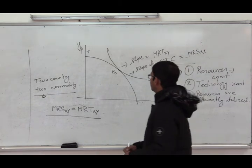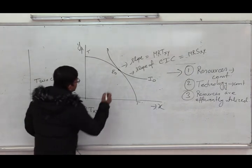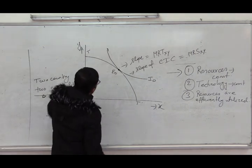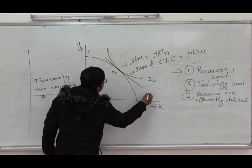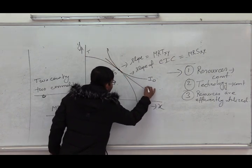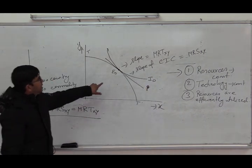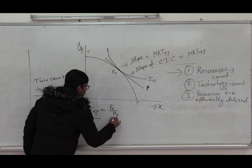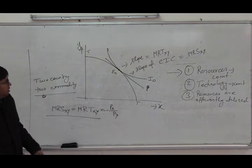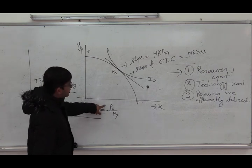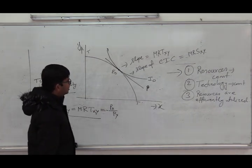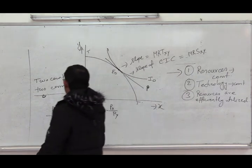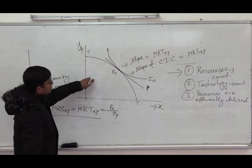Regarding the price ratio under autarky: the price ratio is determined by the interaction of demand and supply, and is given by the straight line P which is tangent to both the CIC and the PPC at the point of equilibrium. The slope of this line gives us minus PX by PY. We use a negative sign because if we want to increase the consumption of X, we have to sacrifice the consumption of Y.